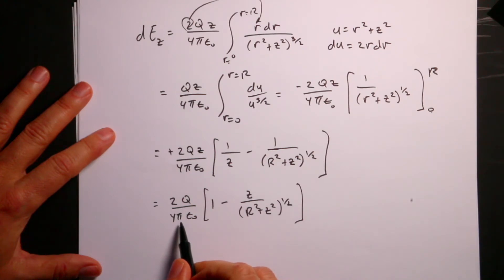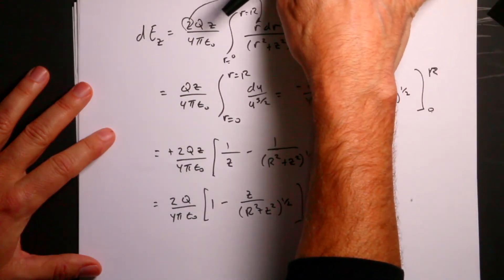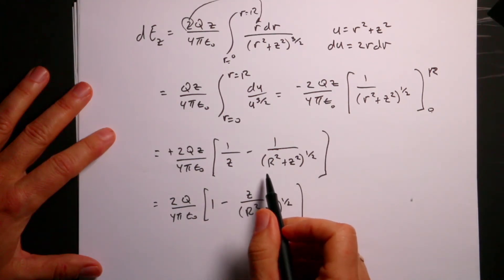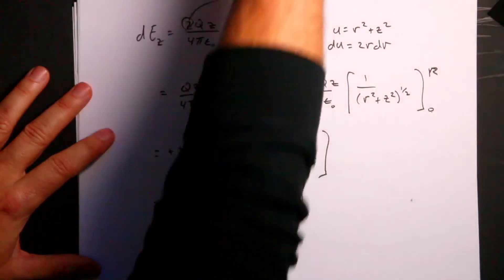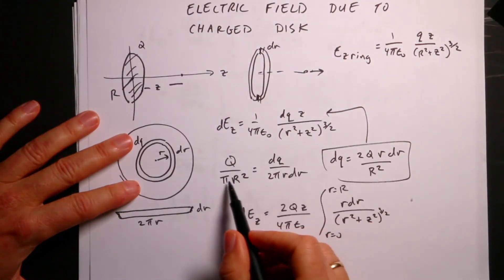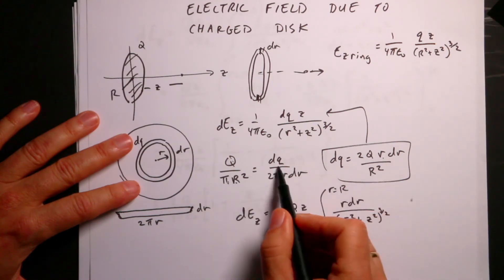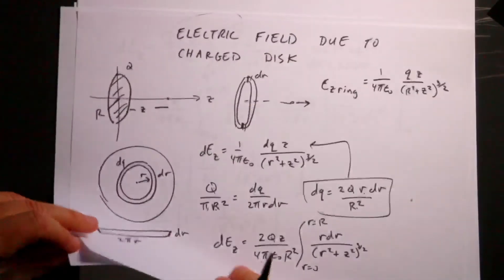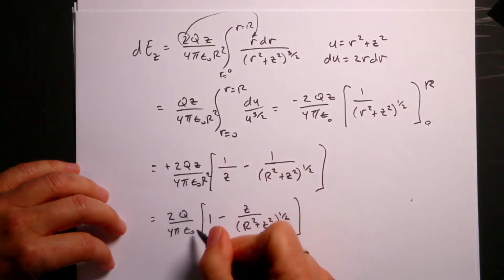I notice I should have Q over π R squared somewhere. Oh — I missed the R squared way up here. There should be an R squared term in the denominator. So this has an R squared, this has an R squared, this has an R squared, and this has an R squared — I left it off when I wrote down the steps.